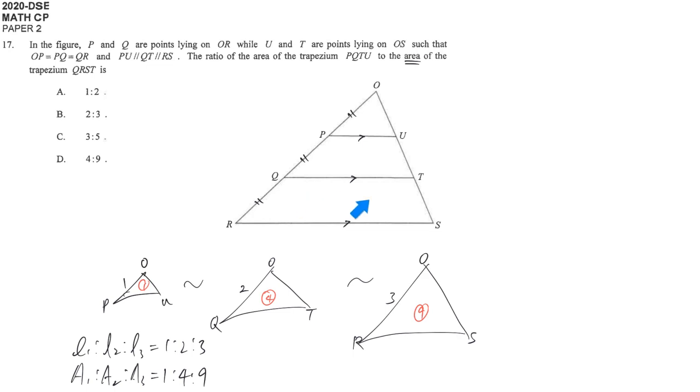Now we can get each trapezium part by part. The bottom trapezium is the difference between the largest triangle and the middle triangle. So 9 pieces minus 4 pieces. This is 5 pieces.